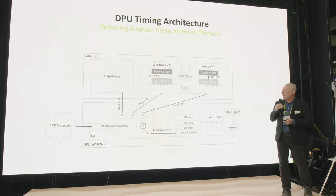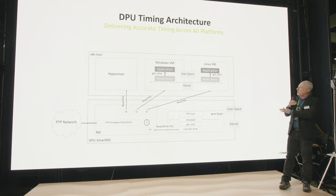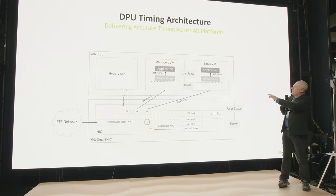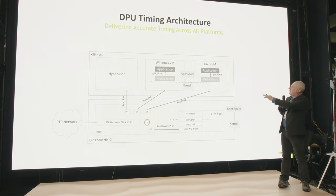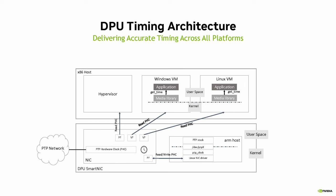In summary: your Windows application — whether in a VM or on bare metal — has its network updating the PTP hardware clock on the DPU, and the application reads the PTP hardware clock directly to get accurate time.